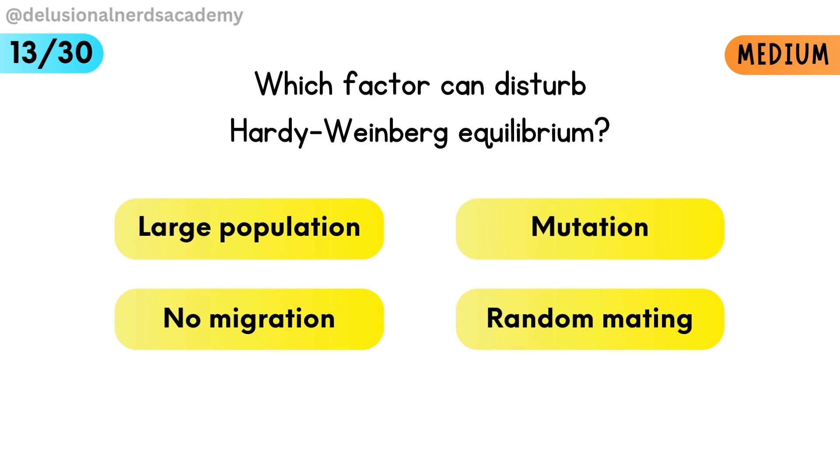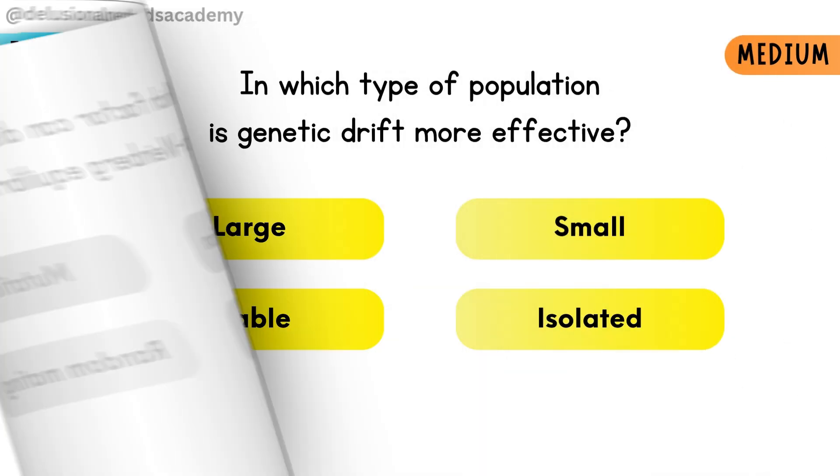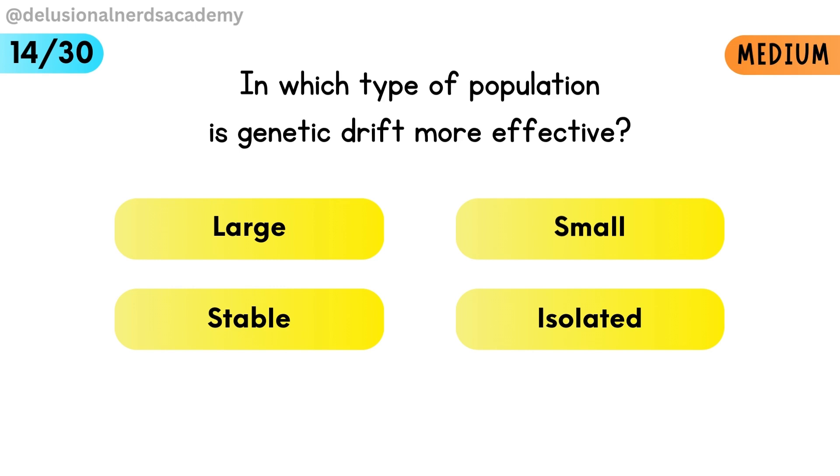Which factor can disturb Hardy-Weinberg equilibrium? Mutation disturbs Hardy-Weinberg equilibrium. In which type of population is genetic drift more effective? Genetic drift works more strongly in small populations.